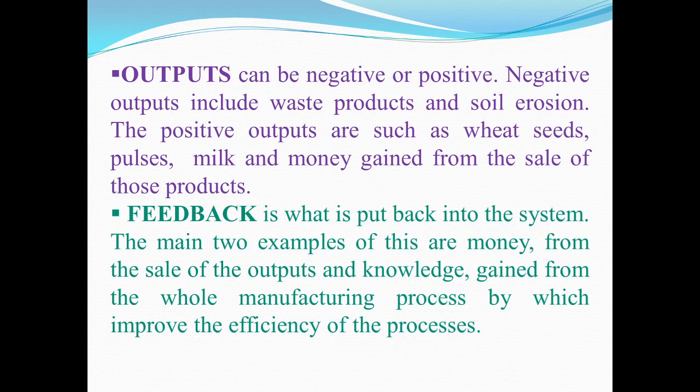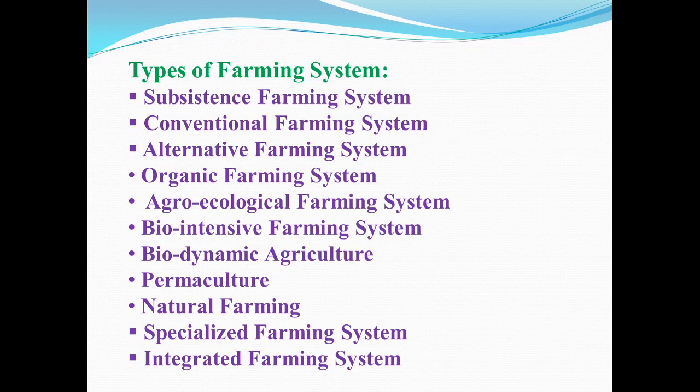Next, outputs. Outputs can be negative or positive. Negative outputs include waste products and soil erosion. Positive outputs include crops like wheat, seed, pulses, milk, money gained from the sale of outputs and knowledge gained from the whole production process. Feedback is what is put back into the system — the main examples being money from the sale of outputs and knowledge gained from the process.